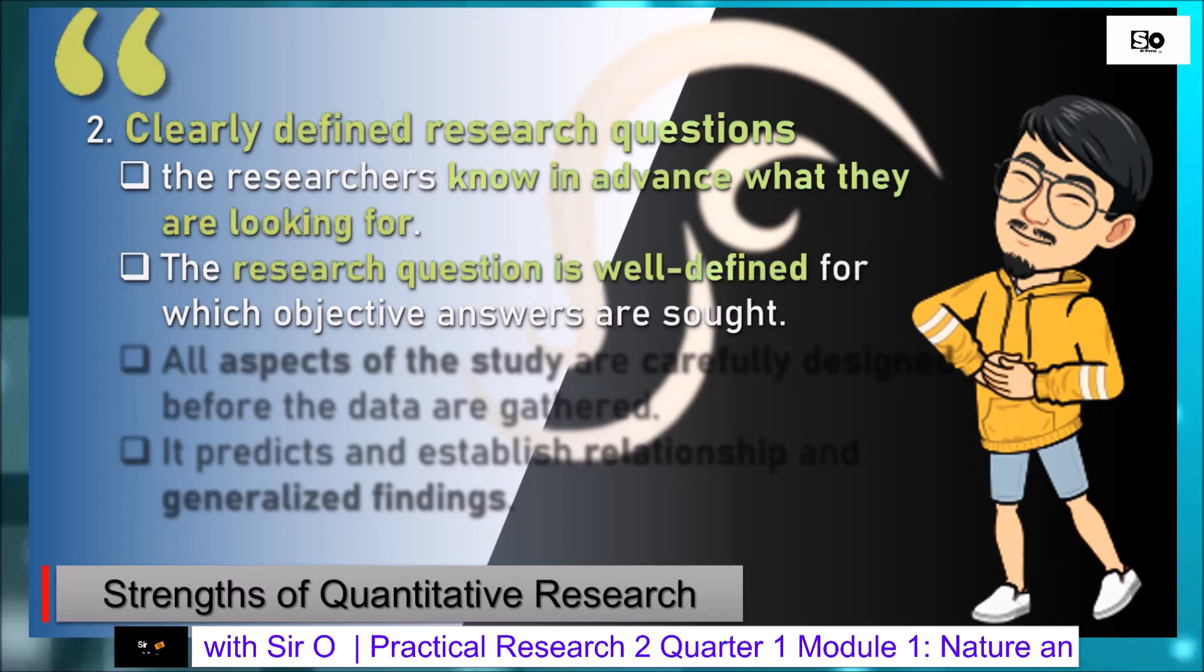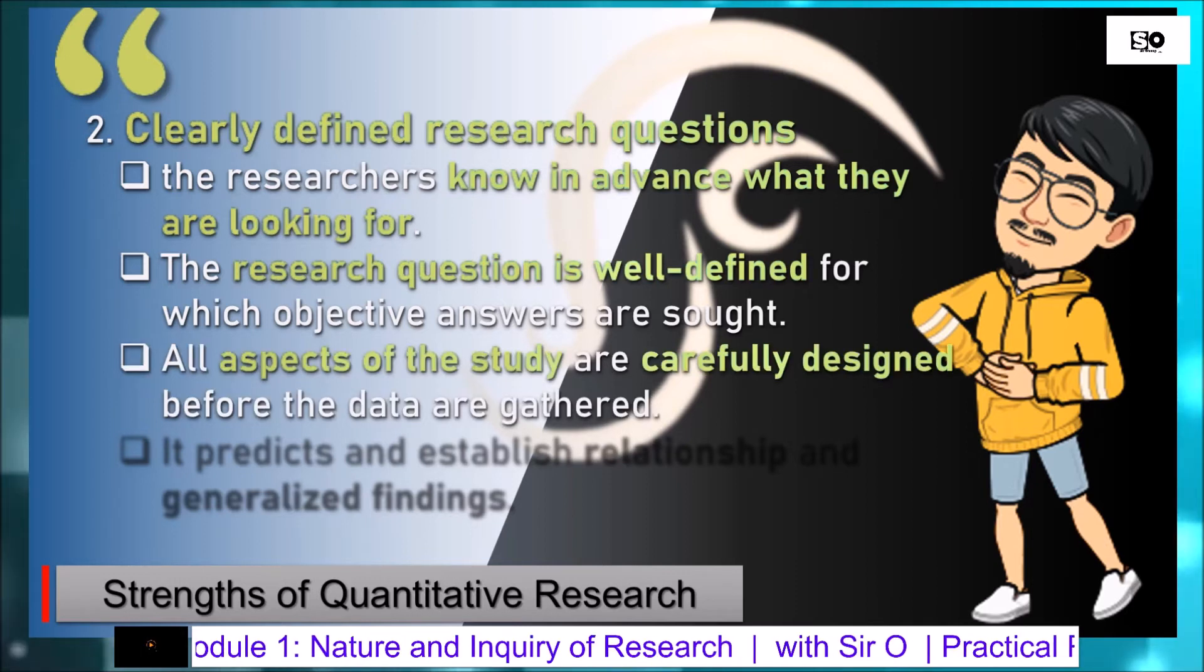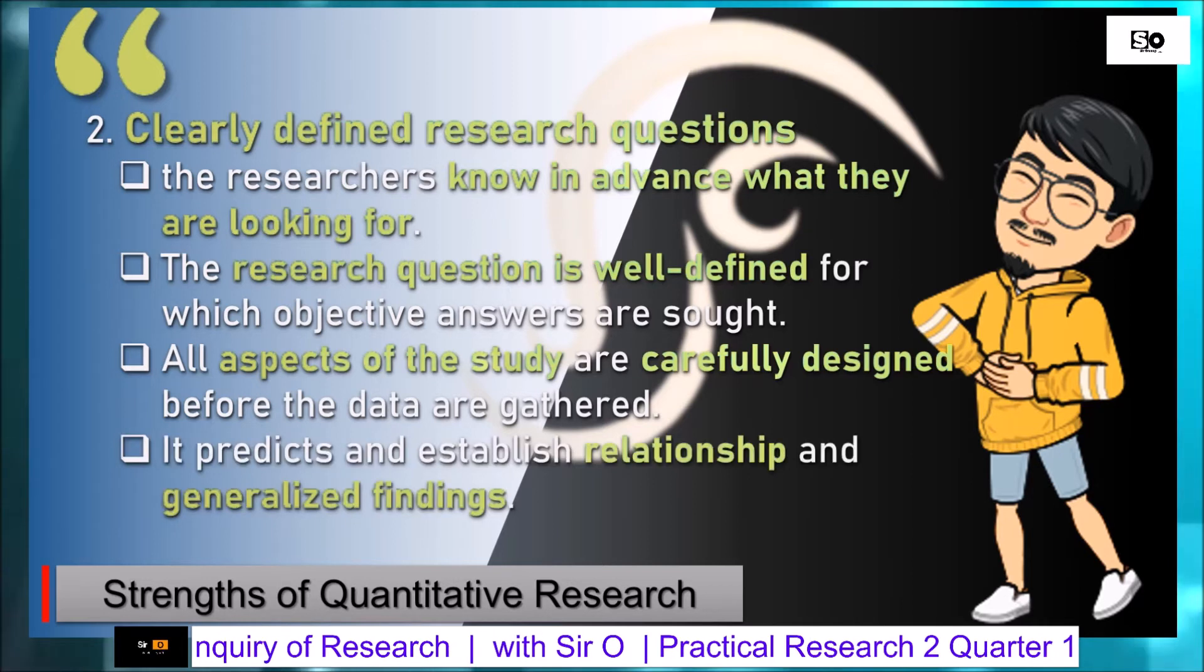All aspects of the study are carefully designed before the data are gathered. Bago pa man tayo magsimulang mangalap ng data through survey questionnaire, siguraduhin muna natin ang mga proseso nating gagawin ay may systematic na pagkakasunod-sunod or step-by-step process na susundan para mas madali tayong makakuha ng mga data. It predicts and establishes relationship and generalized findings. Sa pamamagitan ng pagkakaroon ng systematic na pamaralaan, mas mapapadali at makakakuha tayo ng magandang resulta upang masagot ang mga katanungan nating kailangan bigyan ng mga solusyon.